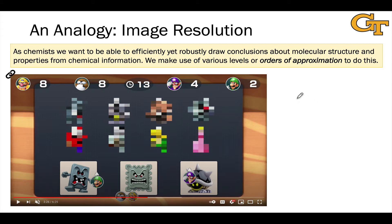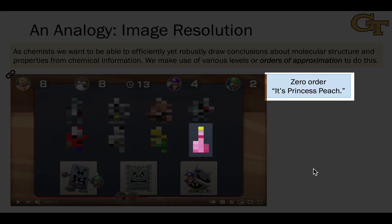You can see they start out very blurry and they get progressively sharper. We can think about the level of blurriness as an analogy to the order of approximation with the most blurry image being the zero-order approximation. For example if I'm looking at this image in the bottom right, just from this picture and my knowledge of the Mario universe, I'm fairly confident that this is Princess Peach.